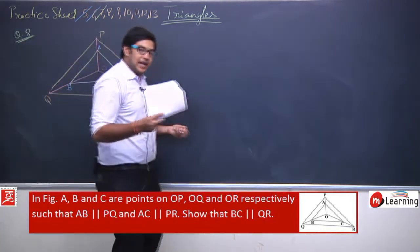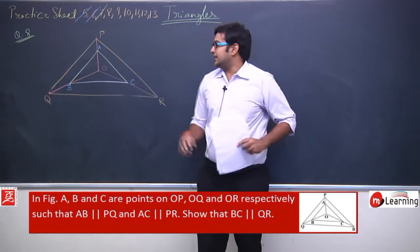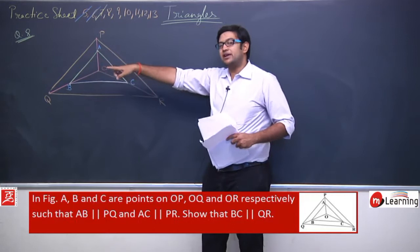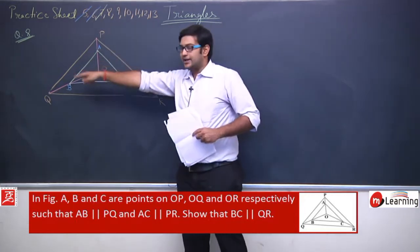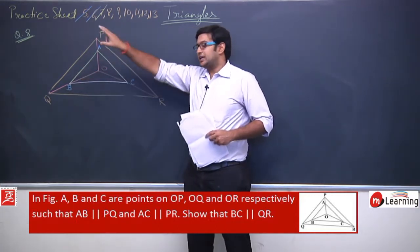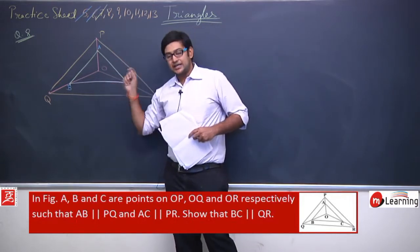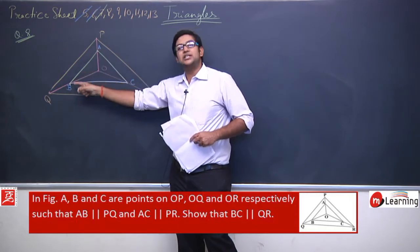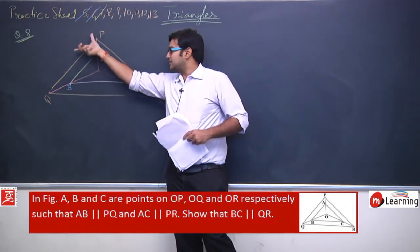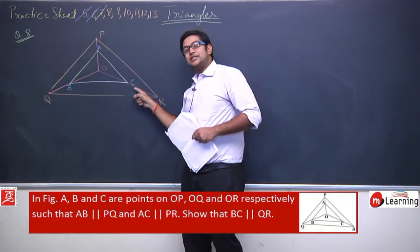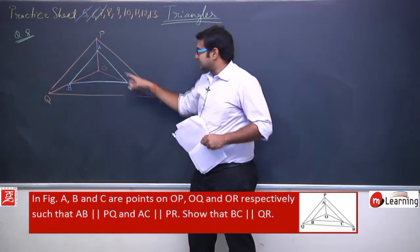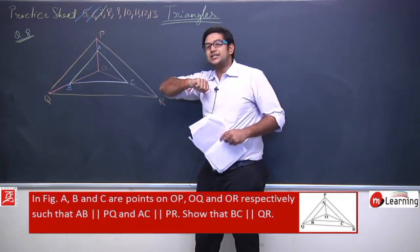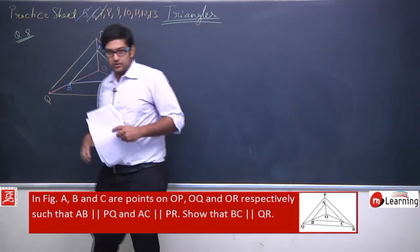So the figure has a triangle with an interior point O, with lines OP, OQ, and OR joining the three vertices. On these three lines are points A, B, and C arranged so that AB is parallel to PQ, and AC is parallel to PR. Our task is to prove BC is parallel to QR.